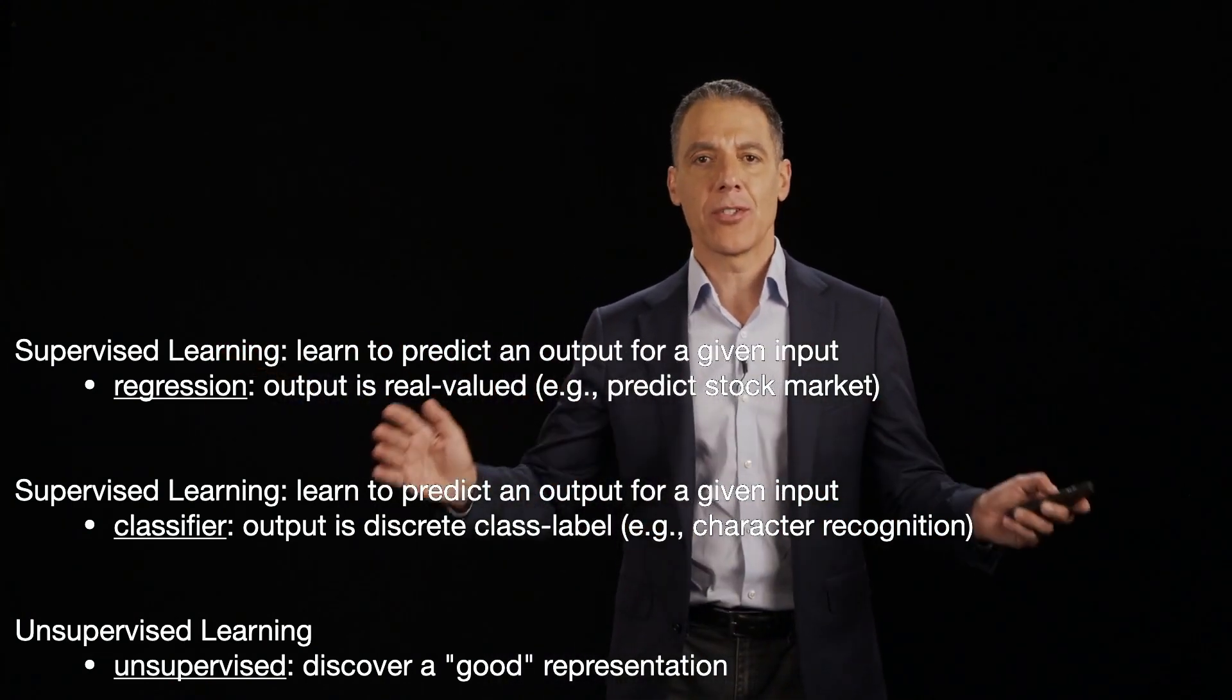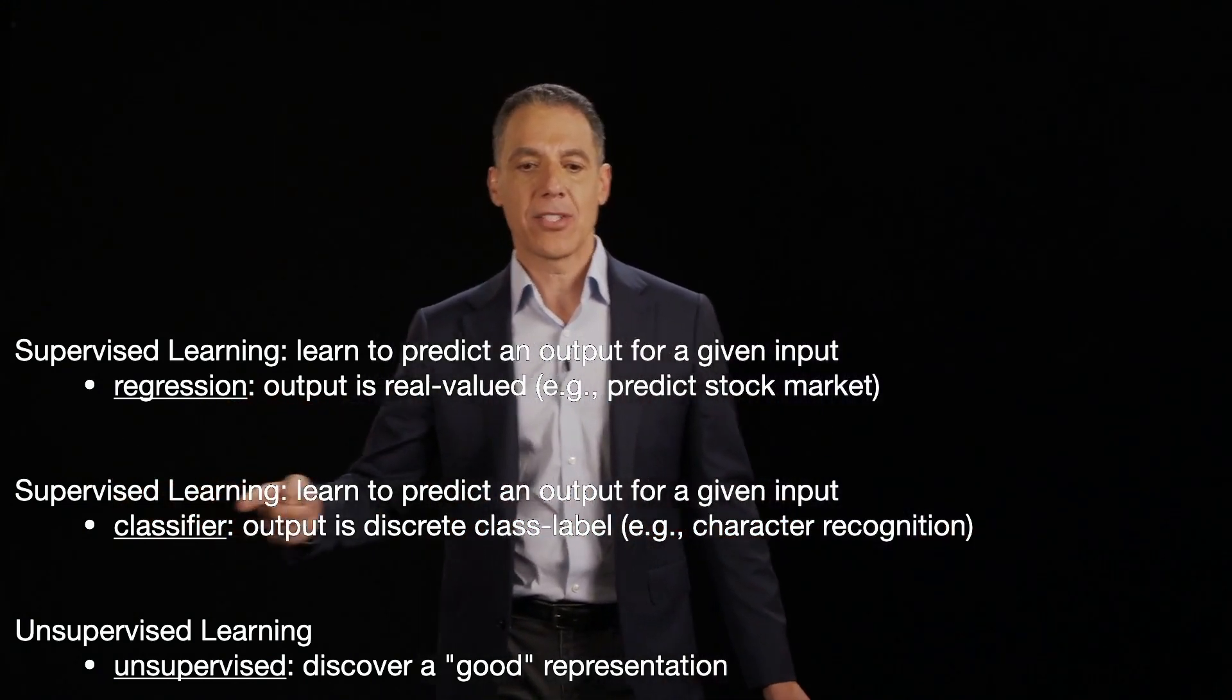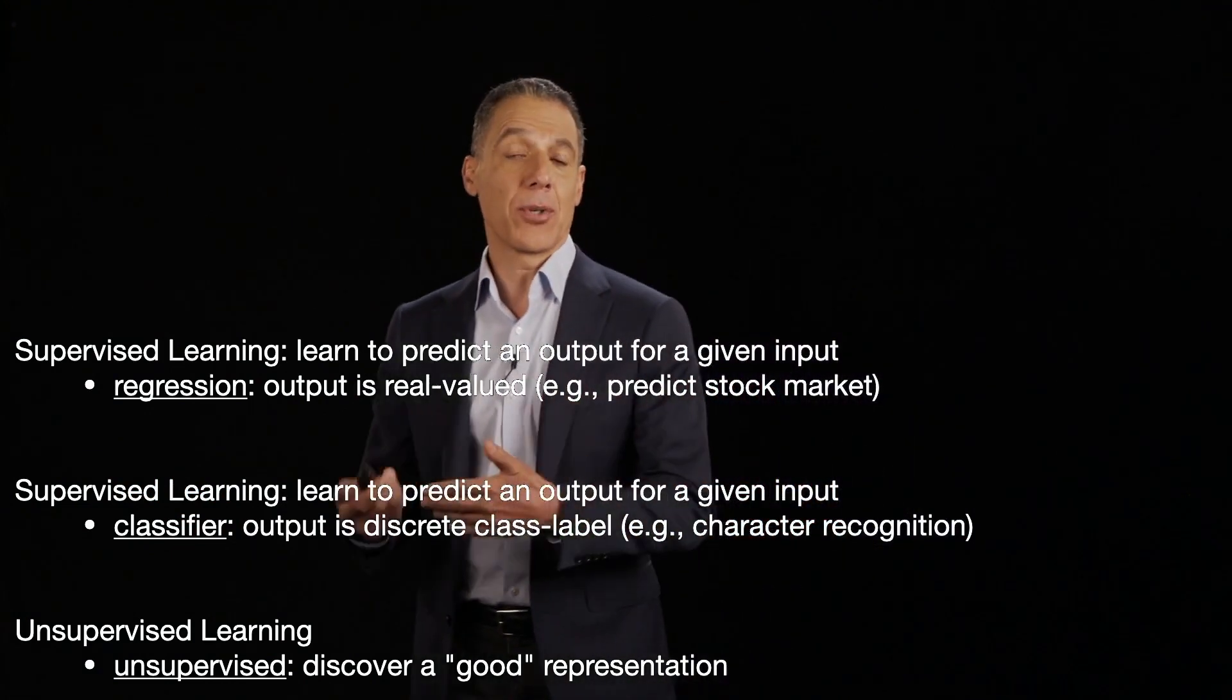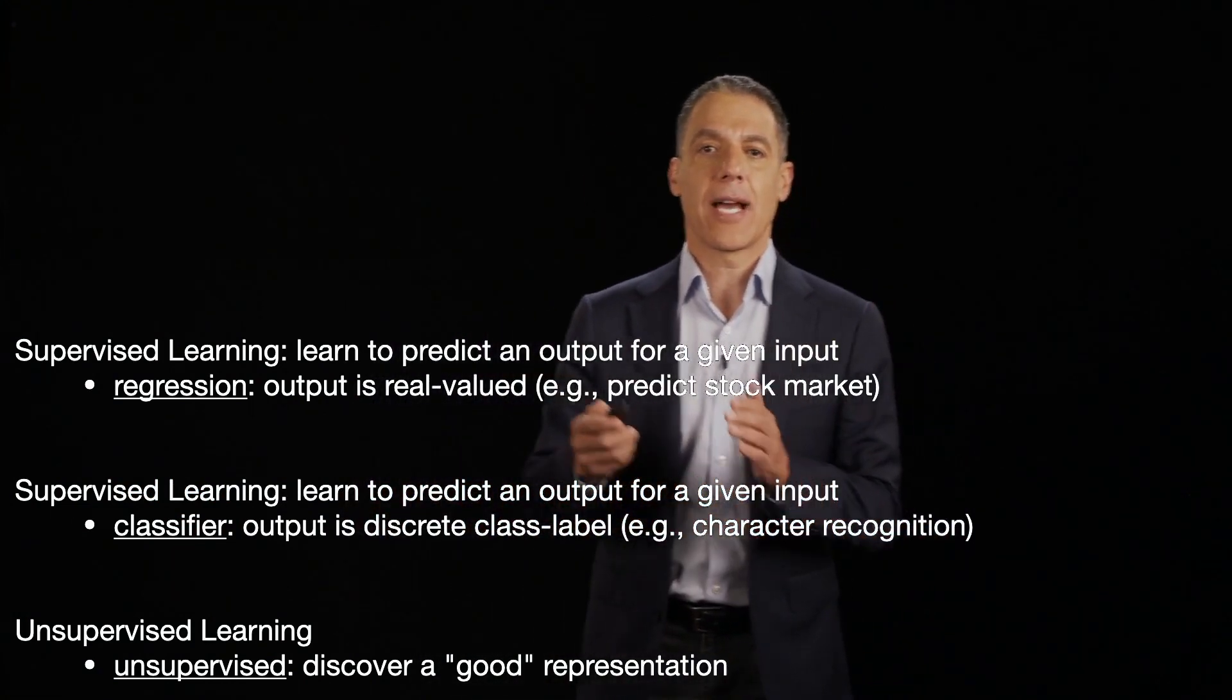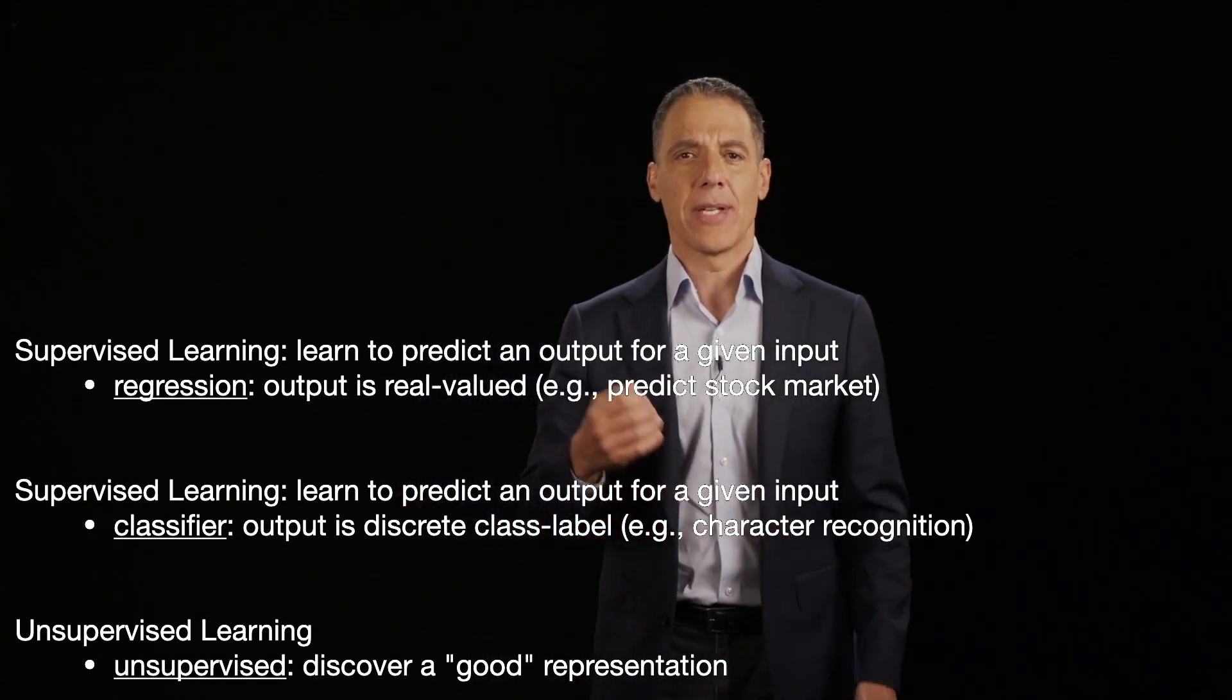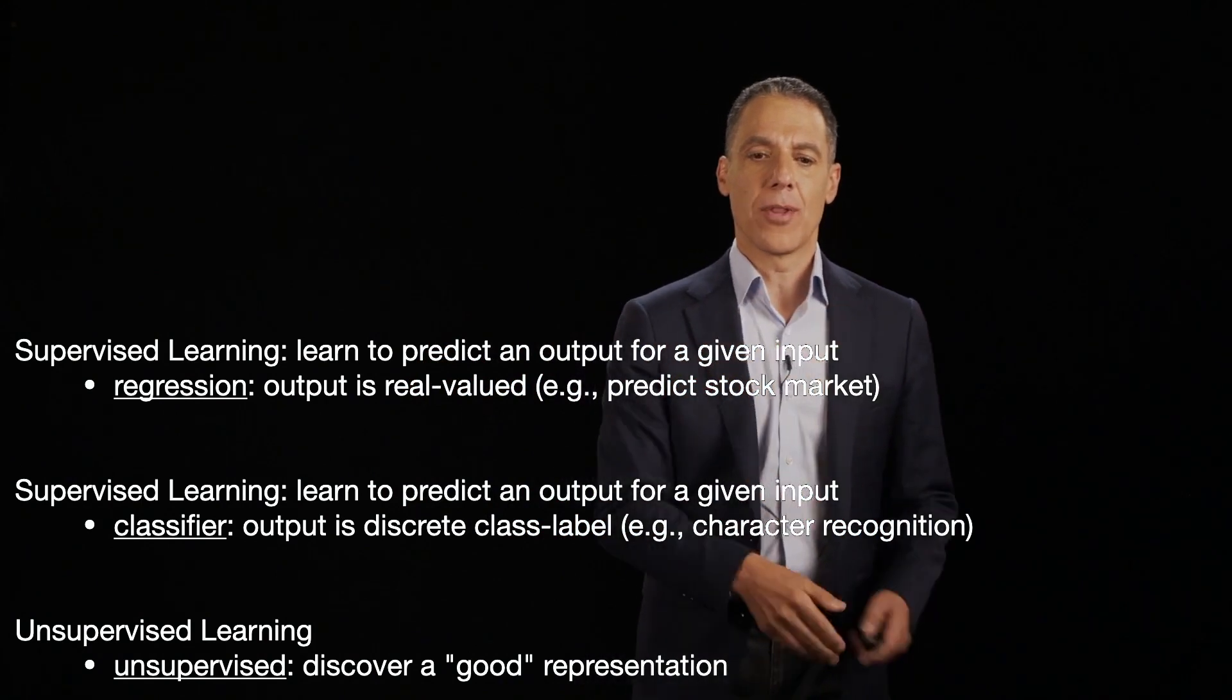And now what we're going to do is transition to the second type of supervised learning where we now have discrete class labels. So think recognize a person from their face. Think recognize a digit or a character from a scanned document, where now it's, is it the letter A, the letter B, or the letter C?